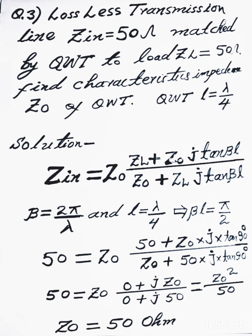Zin equal to Z0 multiply by ZL plus Z0 j tangent BL divide by Z0 plus ZL j tangent BL.